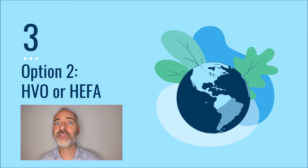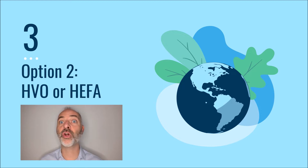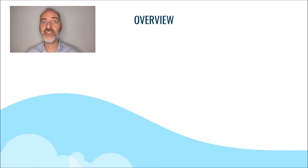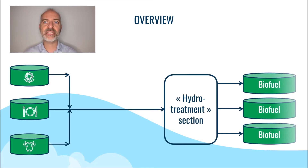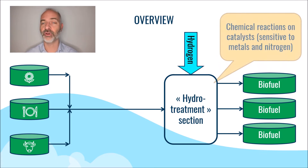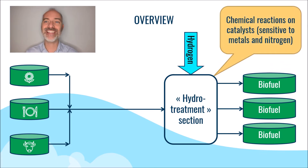For this alternate pathway, we will use hydrogen that will break the triglyceride but will also remove all the oxygen. All this will be done on a catalyst, but this catalyst is very sensitive to impurities that we have already detailed earlier in this MOOC, especially metals and nitrogen.